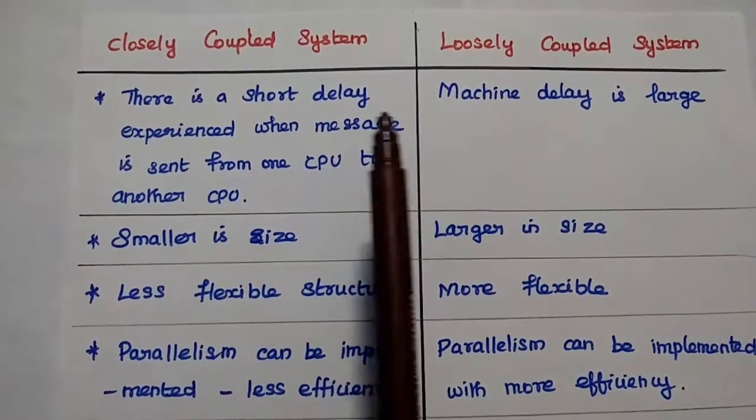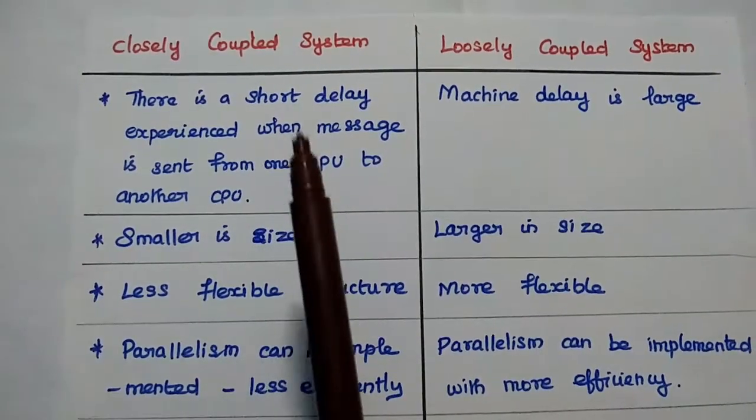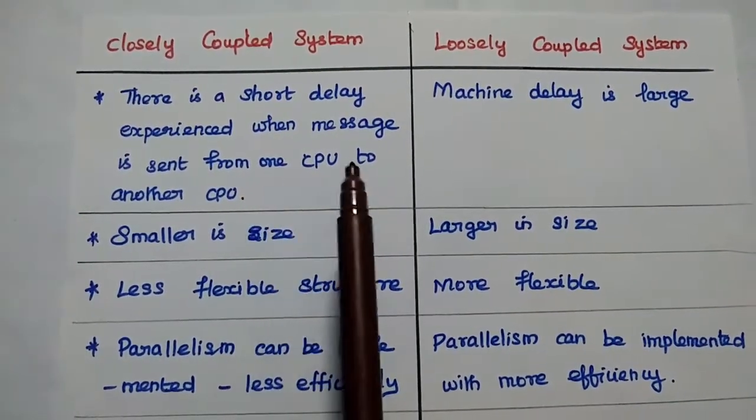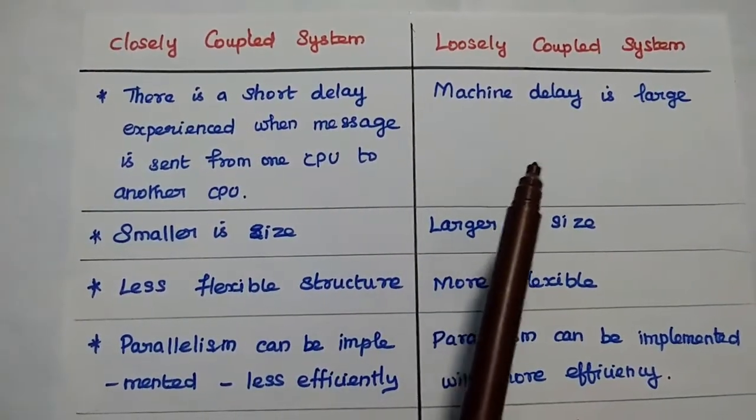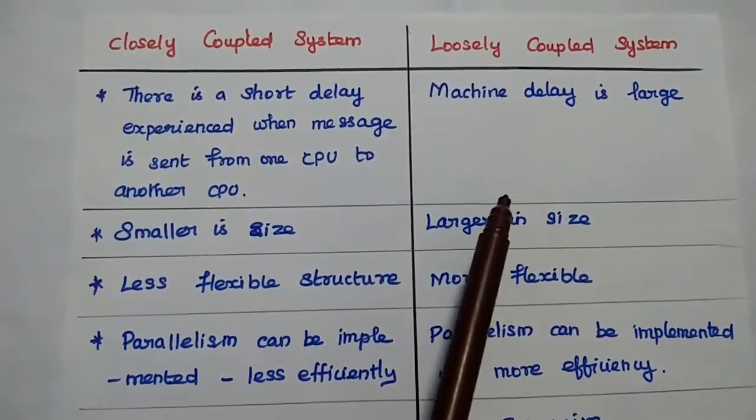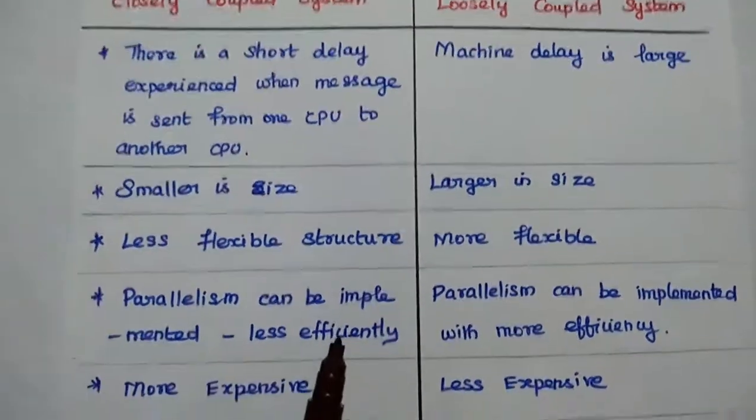In closely coupled system, there is a short delay experienced when the message is sent from one CPU to another CPU. But in this loosely coupled system, machine delay is extremely large. Here it is short, here it is very large.